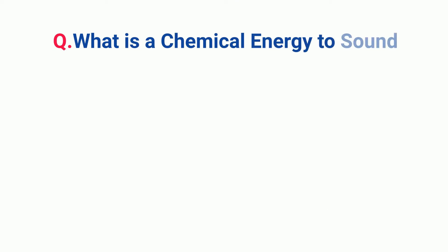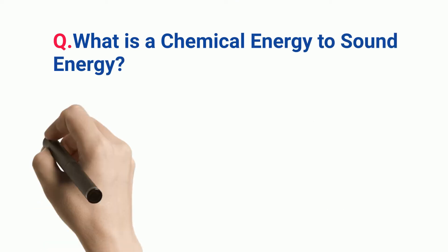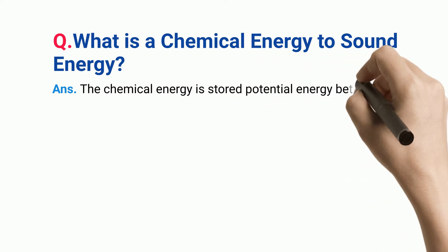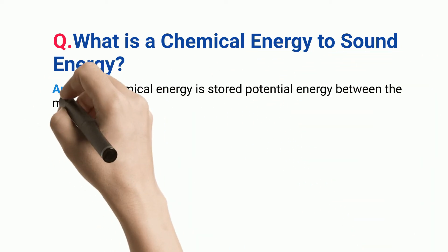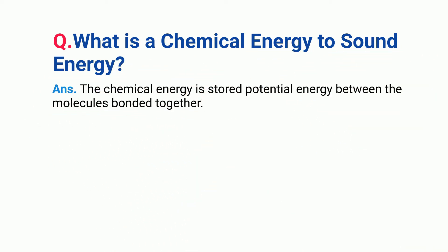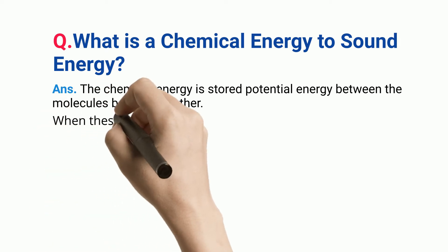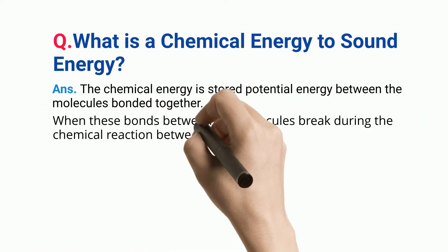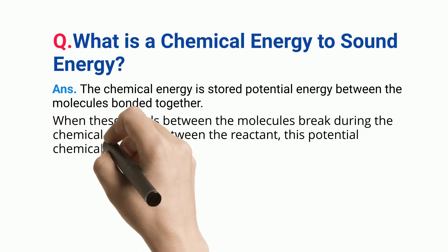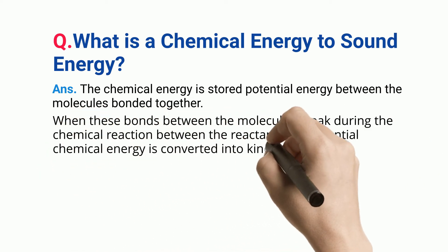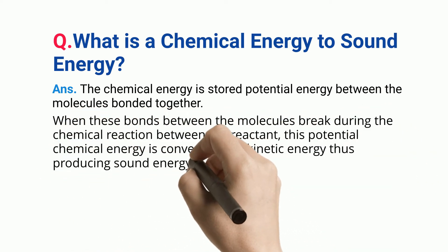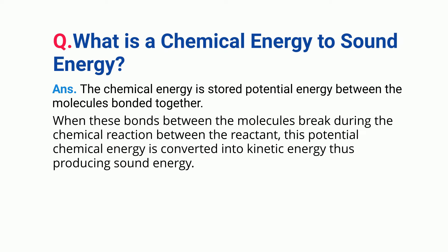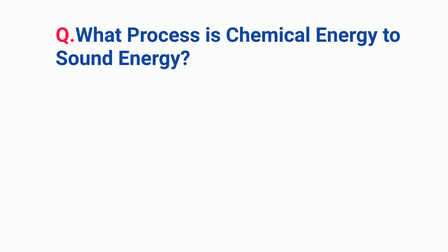What is chemical energy to sound energy? Chemical energy is stored potential energy between the molecules bonded together. When these bonds between the molecules break during the chemical reaction between the reactants, this potential chemical energy is converted into kinetic energy, thus producing sound energy.